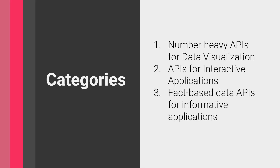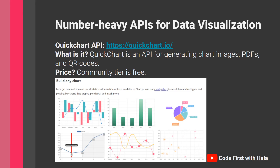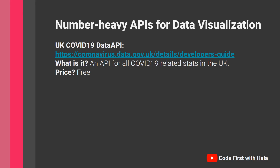Let's get started with the number-heavy APIs for data visualization. The first is the QuickChart API, which generates charts, PDFs, and QR codes. From their website you can see the types of charts you can generate. There are different tiers: the community tier is completely free, while more complex tiers with more features are paid. For someone making a personal project, the free community tier is actually very good.